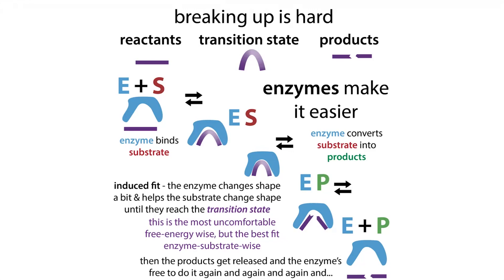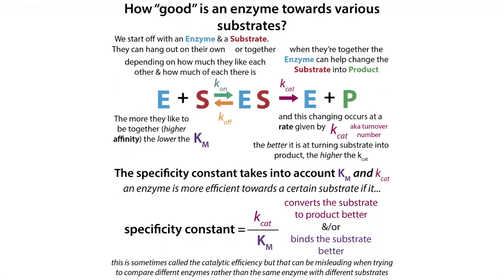Enzymes are great — they greatly speed up reactions and they don't get used up in the process. Not so great is trying to figure out exactly how they're doing it, or at least trying to wrap your head around kinetics. Kinetics deals with how fast enzymes work, and these kinetic schemes can get really complicated because you can be dealing with lots of different substrates, different steps, and conversions. So we often simplify things by thinking in terms of Michaelis-Menten kinetics.